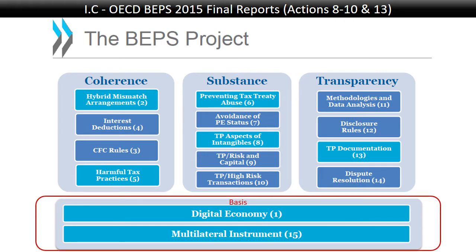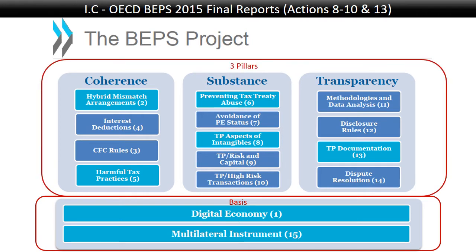The first is a basis where what they've done in these two actions applies across the board to everything. Then they had three basic pillars: we must fix the coherence of the international tax system so that things do not contradict each other anymore; we must fix the requirement for substance so that you can't just put up letterbox companies everywhere; and we must have transparency — we can't have taxpayers telling country A one thing and country B something completely contradictory.